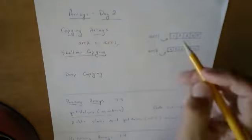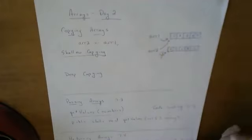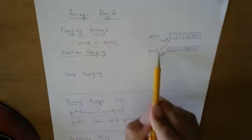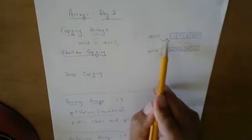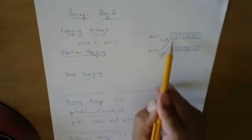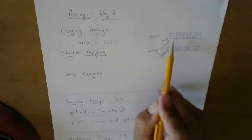And what really happens is array two gets the value of array one. We are only copying the address. So when I make that statement, array two equals array one, array two's address now gets the value of array one's address. So what I have are two names now pointing to the same memory location. Both of them point here.